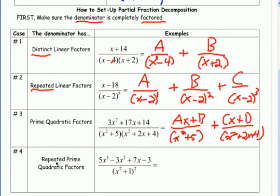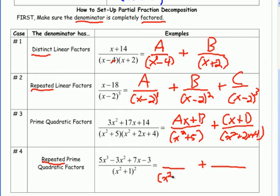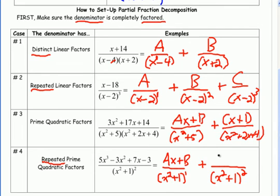The last case is repeated prime quadratic factors, similar to the repeated linear case but with quadratic factors. I have x squared plus 1, which is quadratic, and it's repeated twice — so I need two separate fractions. The first denominator is x squared plus 1 to the first power, and the second is x squared plus 1 to the second power. Because the factor inside is quadratic, I need to make the numerator linear — one degree less. So I'll have ax plus b for the first and cx plus d for the second.